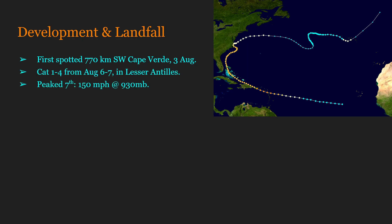In any case, this hurricane would go from Category 1 all the way to Category 4 within around 24 hours, doing this in the Lesser Antilles. It would be while trekking through the Lesser Antilles that the hurricane would slowly start to decrease its forward speed, finally peaking on the 7th just before Puerto Rico, reaching wind speeds of 150 miles per hour at a pressure estimated to be 930 millibars.